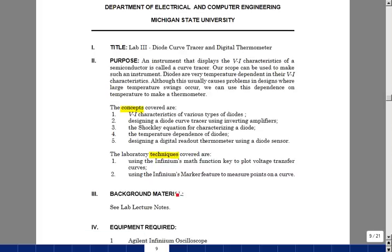And lastly, you could use a digital multimeter to turn it into a thermometer. As far as laboratory techniques go, we're going to take a look at using the math functions to plot voltage versus voltage. And then we're going to use the marker function to read points off of a curve. And this is lab number three, diode curve tracer and digital thermometer. Thank you.